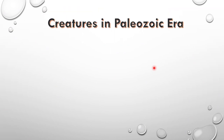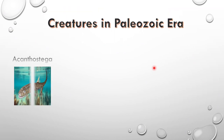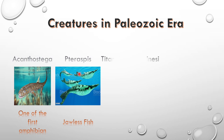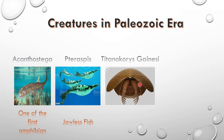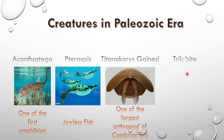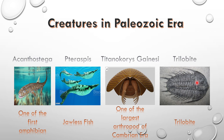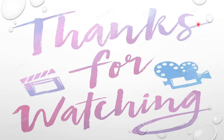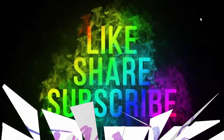Now we have learned about the periods and creatures of the Paleozoic Era. We can see Acanthostega as it looked in real life, then Peteraspis, then Titanokorys gainesi, which was a very newly discovered creature, and the trilobite, which was one of the first arthropods. Thank you for watching — please like, share, and subscribe.